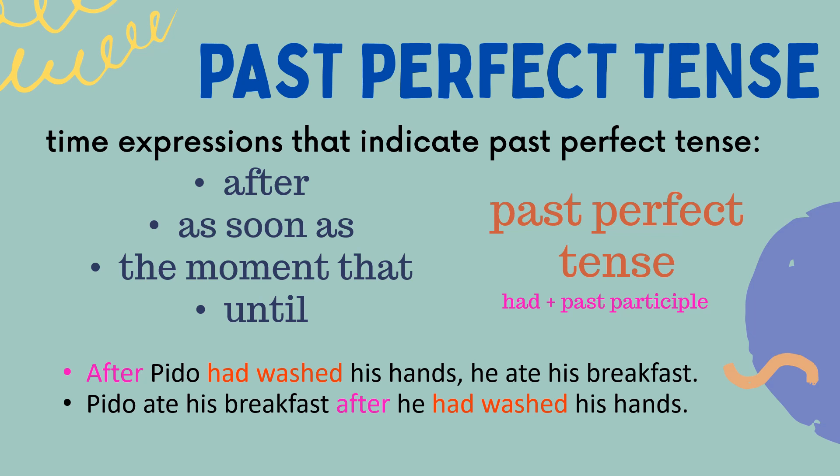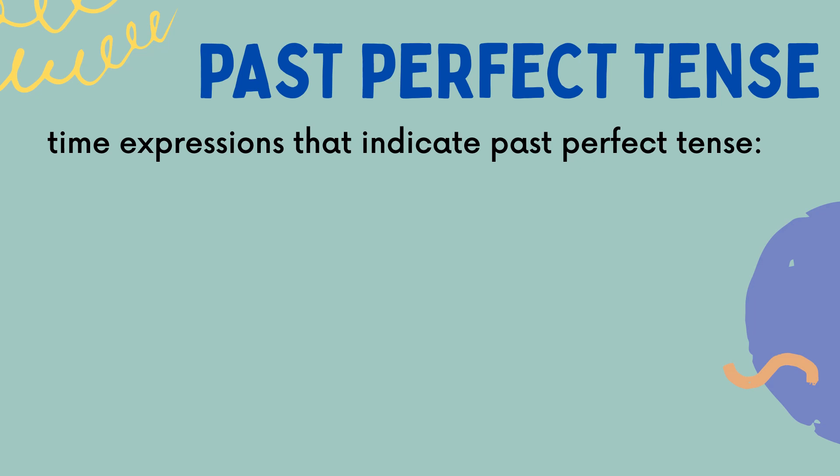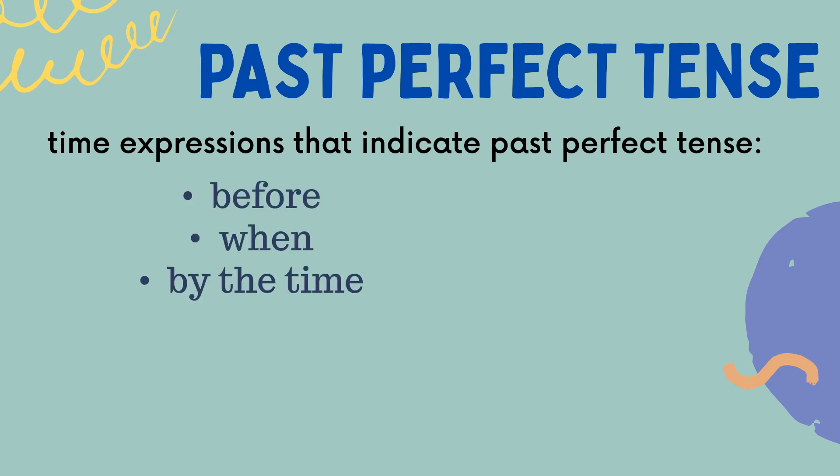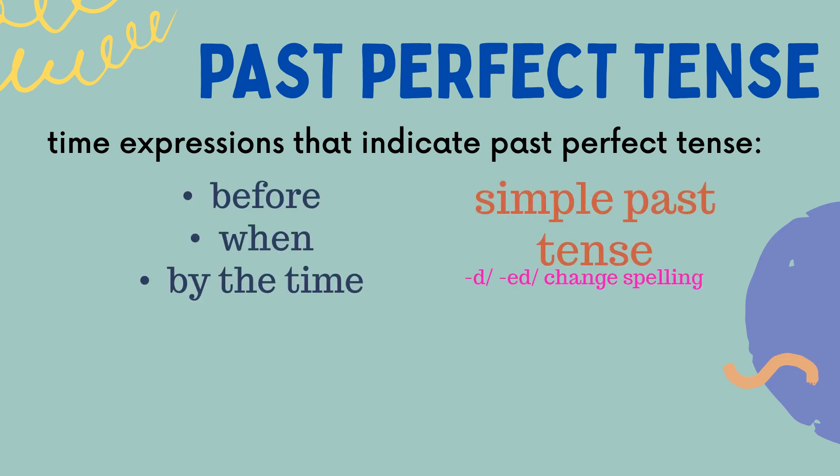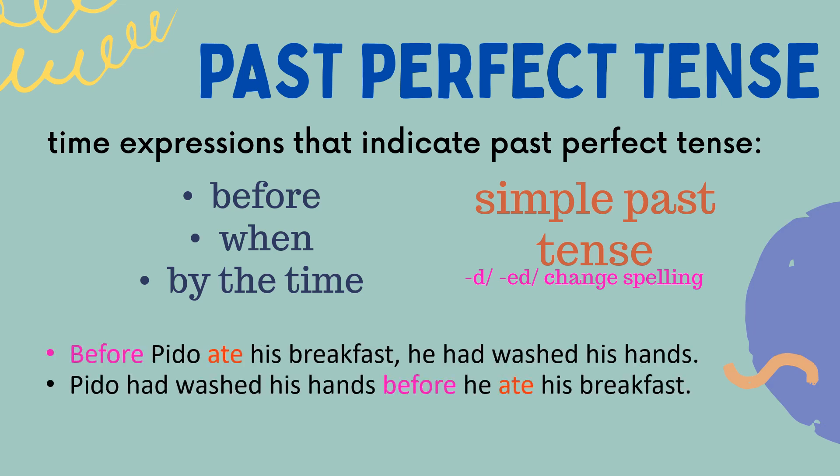Another example: 'Pido ate his breakfast after he had washed his hands.' Take note of the placement of the time expression 'after' — it is now placed in the middle of the sentence, but still it should be followed by the Past Perfect Tense, 'had washed.' The time expressions 'before,' 'when,' and 'by the time' are used before the Simple Past Tense.